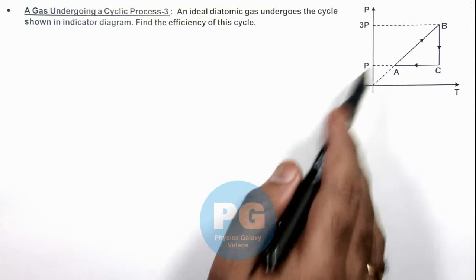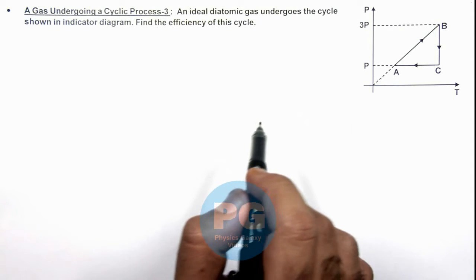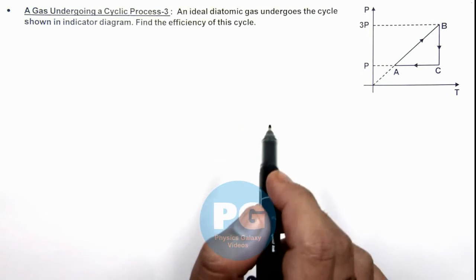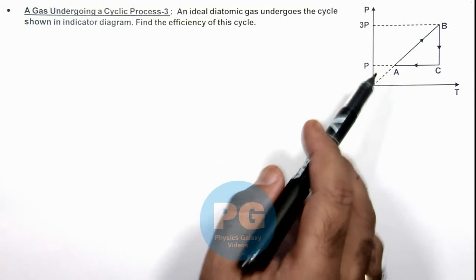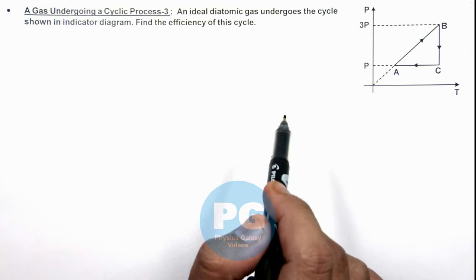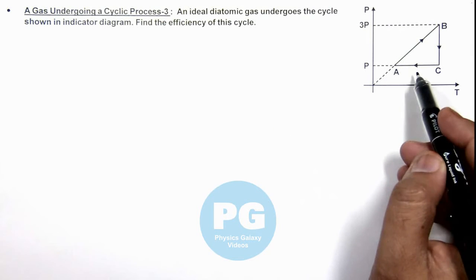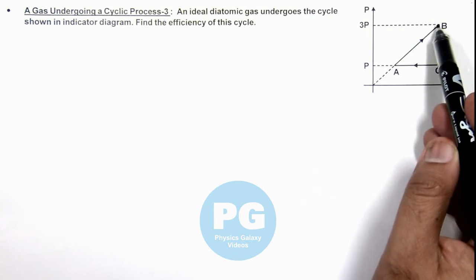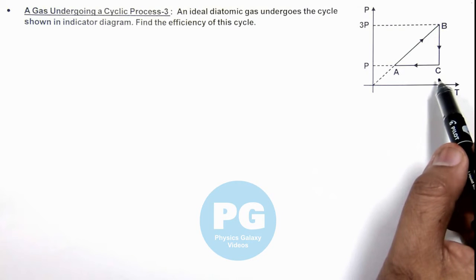Again, to get the efficiency of the cycle we need to calculate the work done by gas in the cycle and heat supplied to the gas, or the total heat which is absorbed by the gas. Here on carefully analyzing this case, we can see in the process A to B, as temperature is rising, heat will be supplied to the gas.